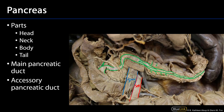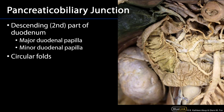The main pancreatic duct meets the common bile duct at the pancreatic biliary junction, and where these two meet is called the hepatopancreatic ampulla. That will then conduct bile and pancreatic juice through the major duodenal papilla. There's also an accessory pancreatic duct, which may or may not connect to the main pancreatic duct. That accessory pancreatic duct, when present, drains the superior portion of the head of the pancreas and drains into the minor duodenal papilla.